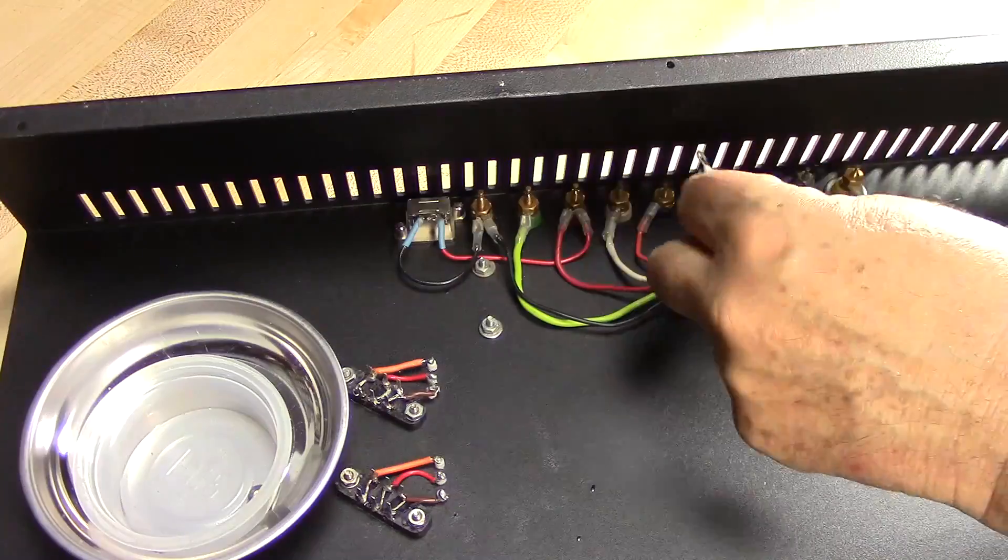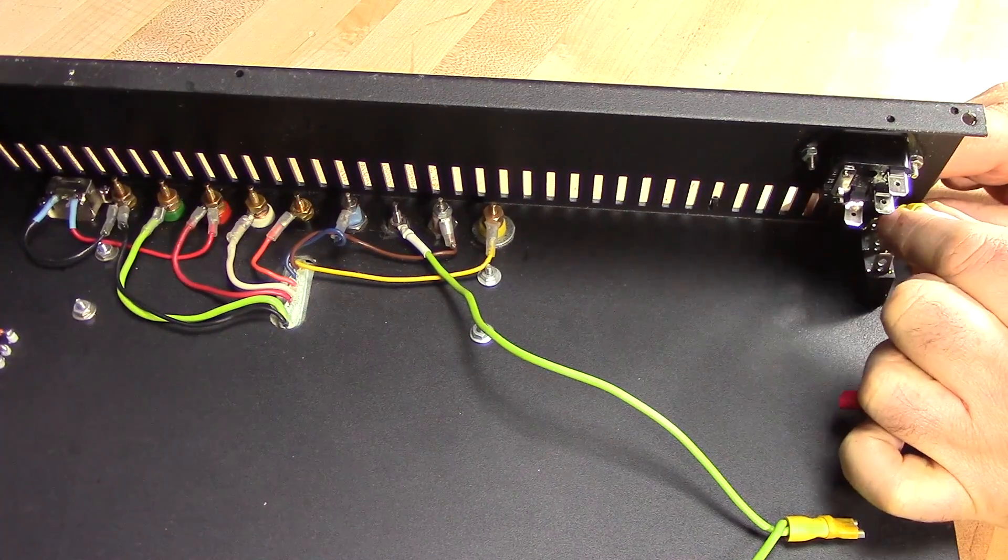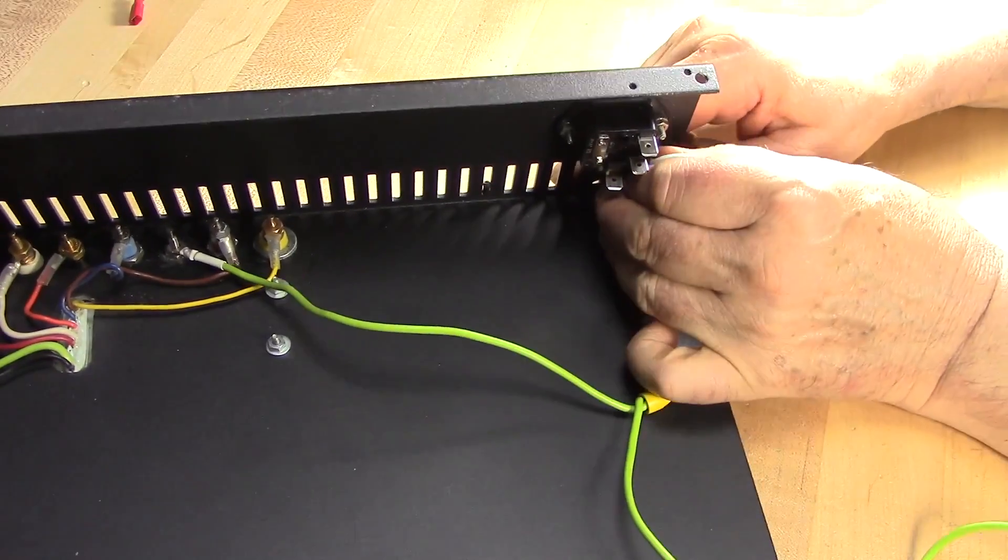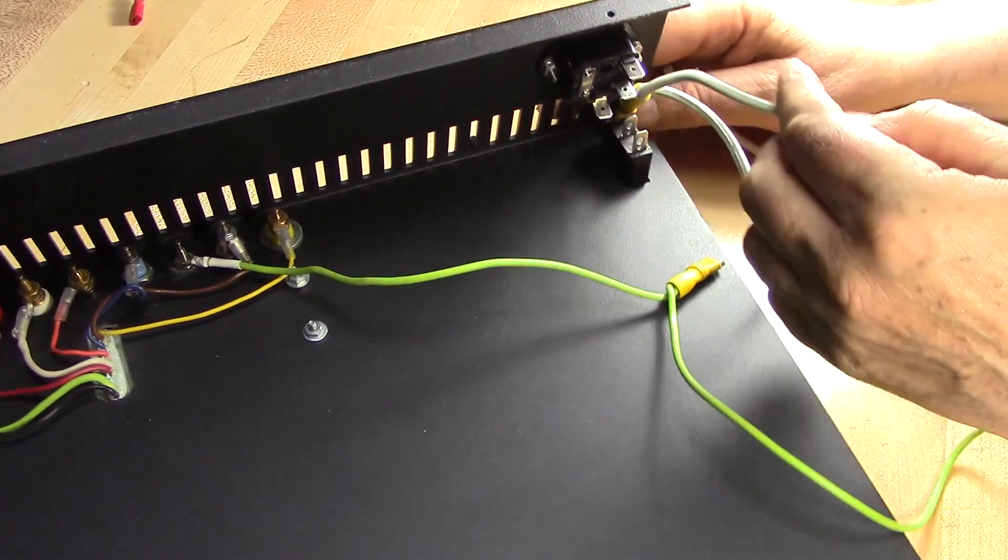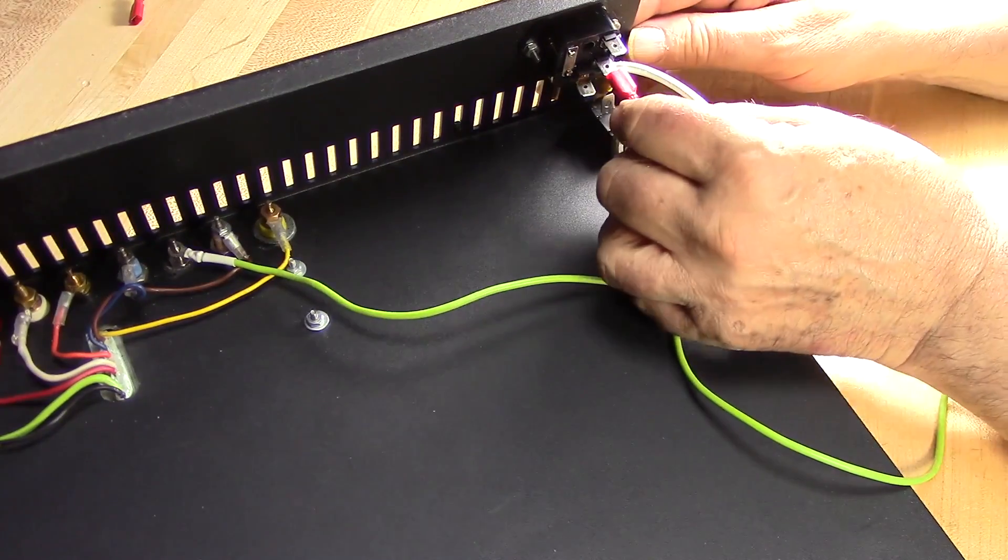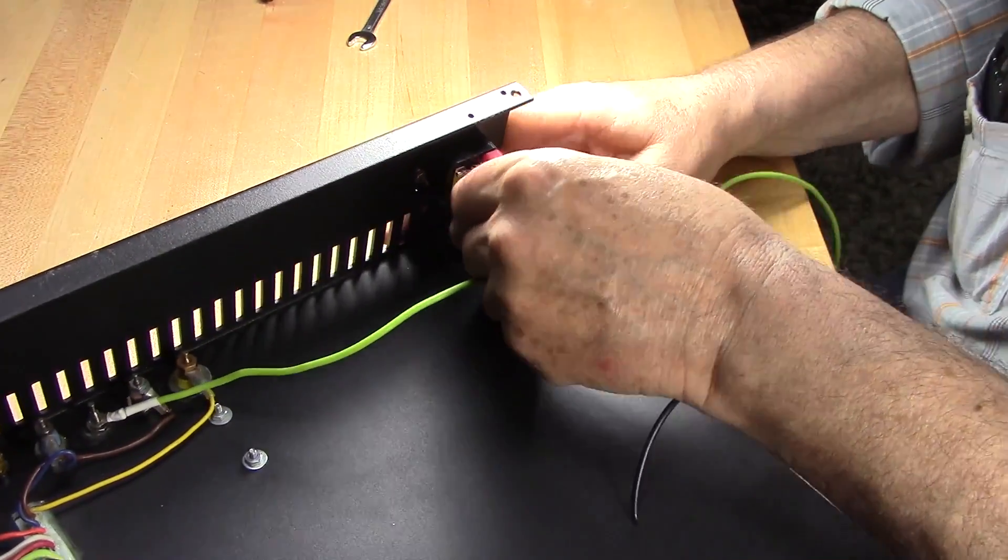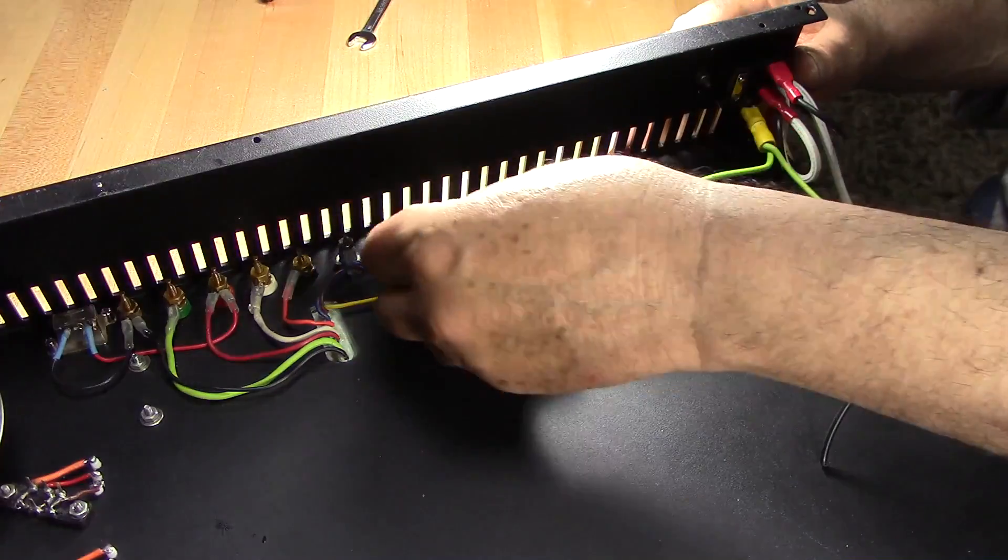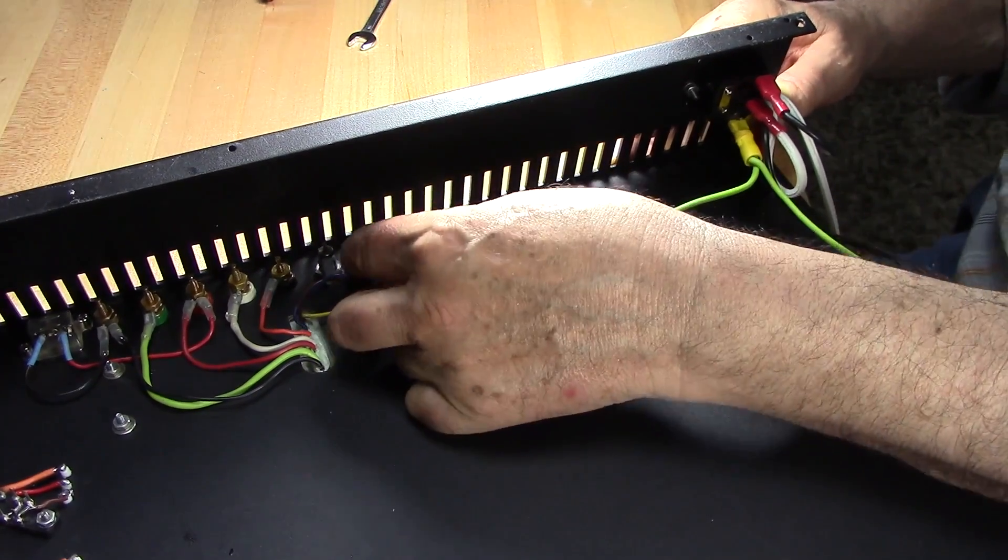Now I'm reconnecting the chassis ground binding post and tightening it up a bit for now. Having connected the green ground wire to the chassis ground binding post, I'm now going to connect the other wires. Starting with the white wire, the neutral, being connected to the power switch and the input module. The black wire connected and now the ground connected.